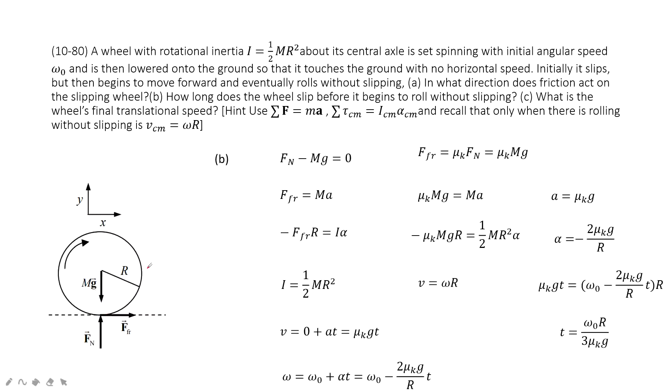The second part asks us to find the time from the initial state until the wheel rolls without slipping. So what does rolling without slipping mean?